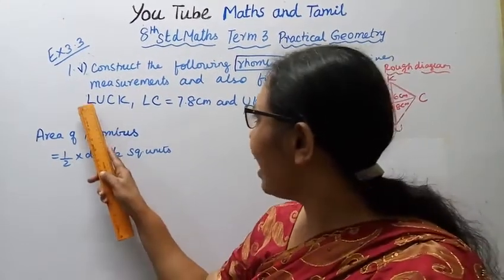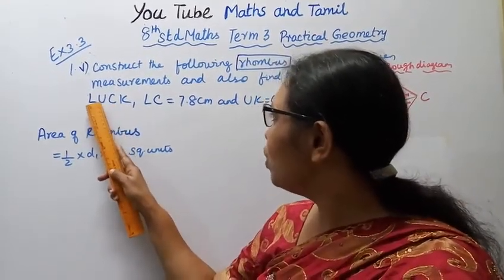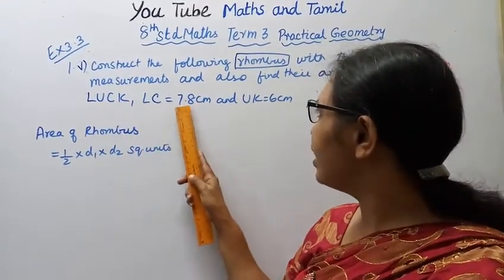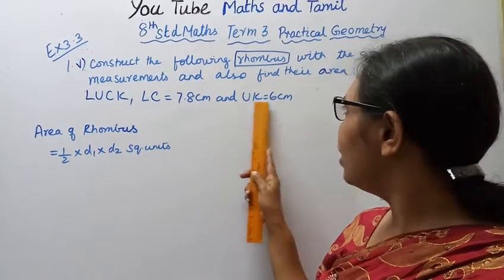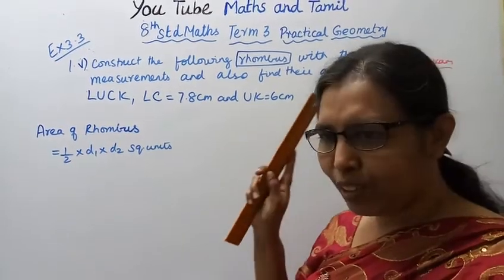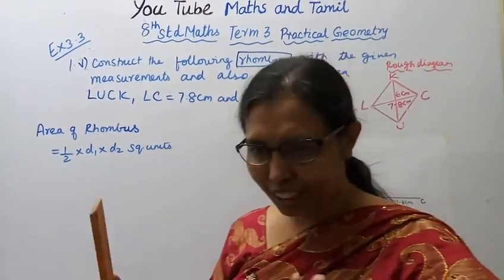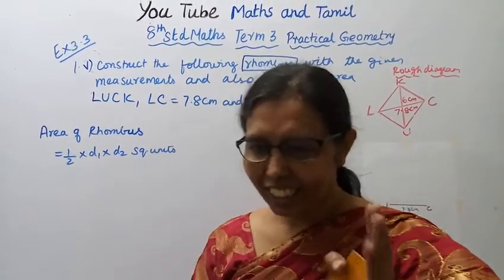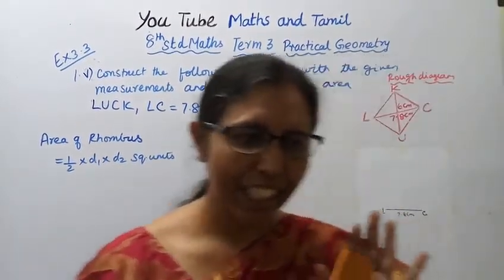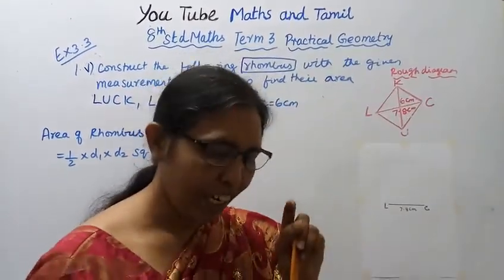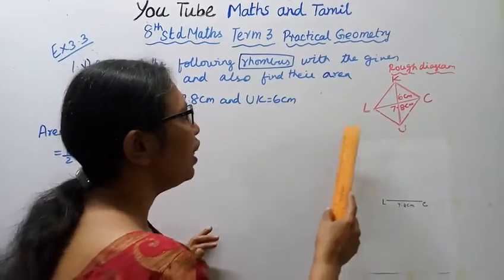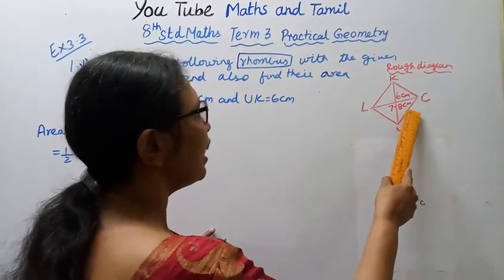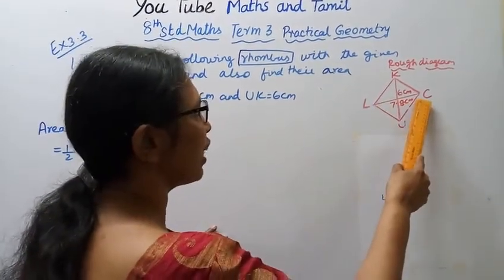LC is equal to 7.8 cm and UK is equal to 6 cm. Now we will draw the diagonal. We have LC as 7.8 cm — this is the first diagonal.